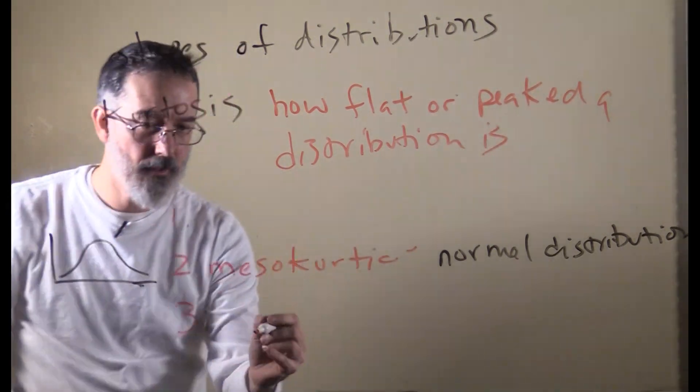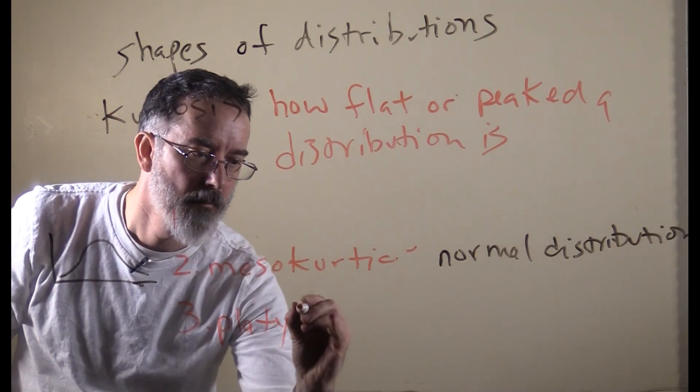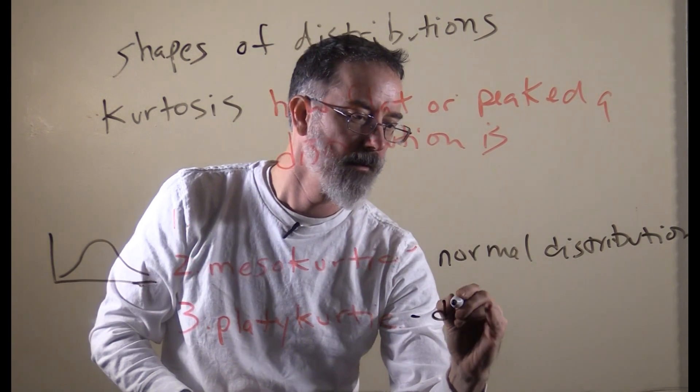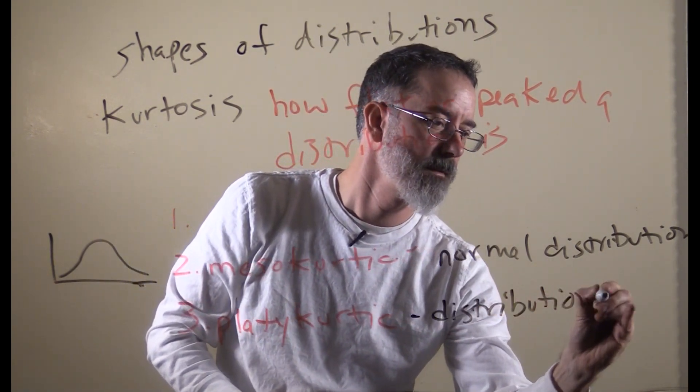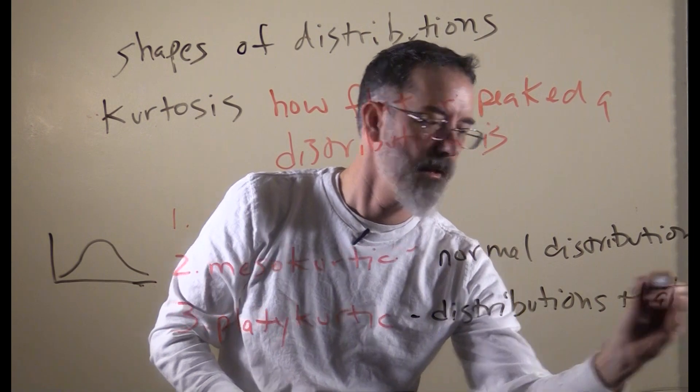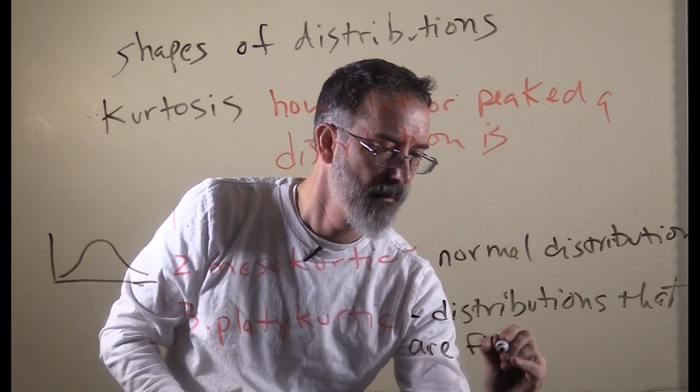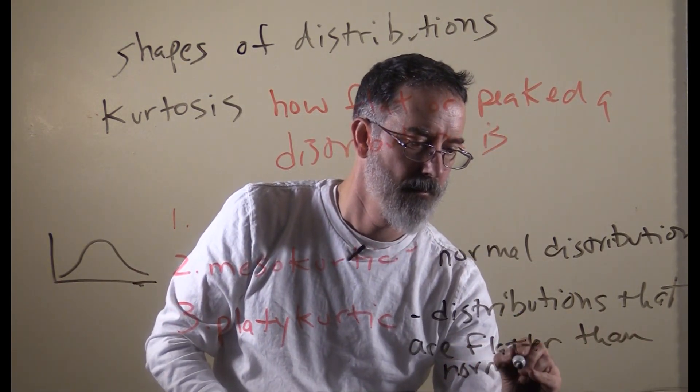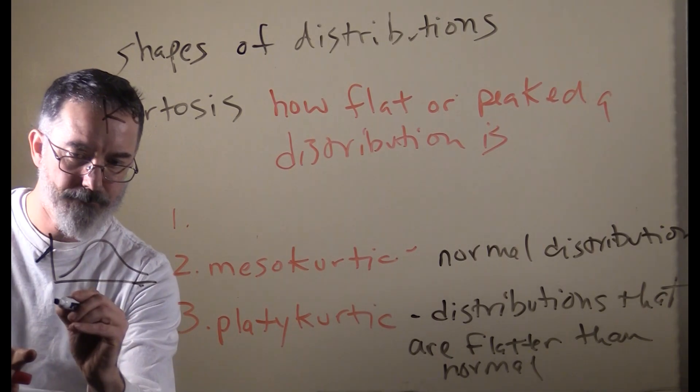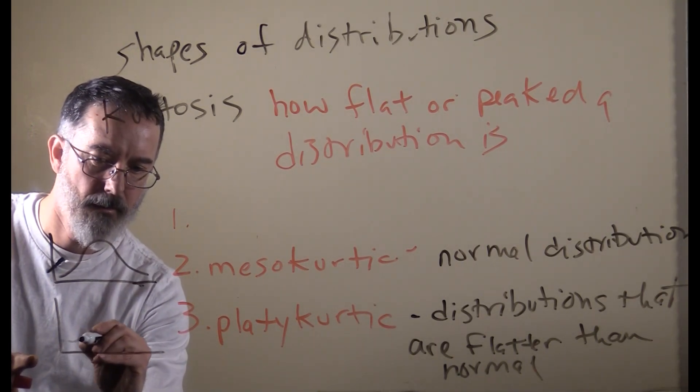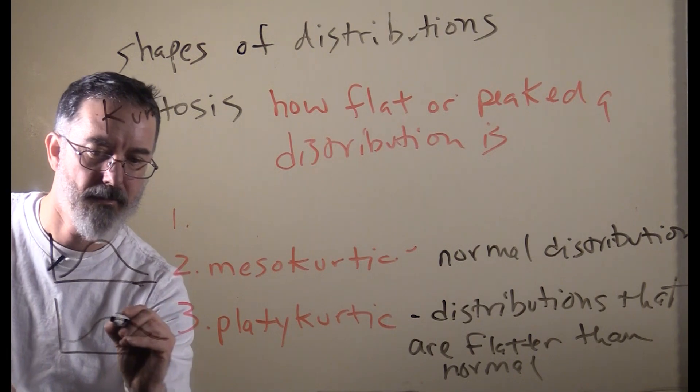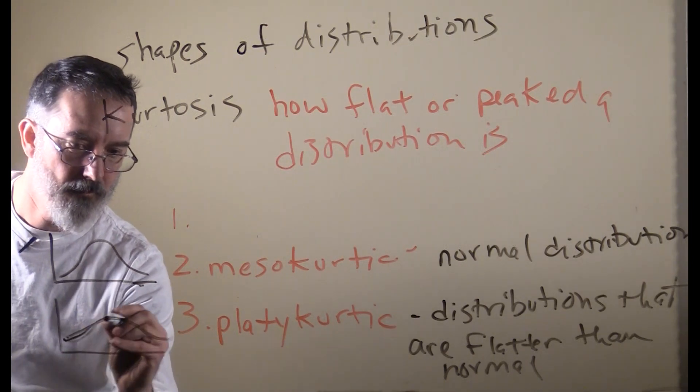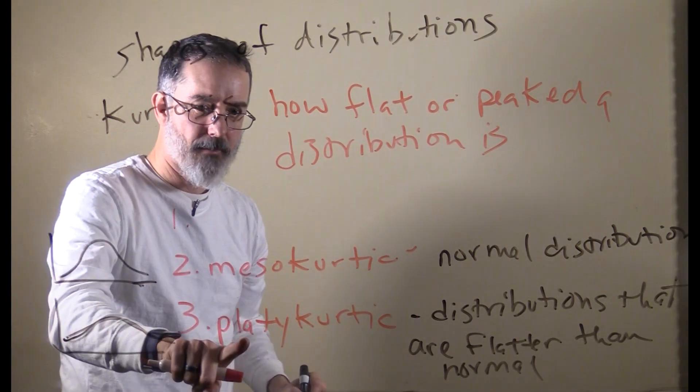Distributions that are flatter than normal are called platykurtic. If I draw one, it looks maybe something like that, trying to make it more squished down, almost like you put your hand on the top and squished it. This is actually pretty easy to remember.